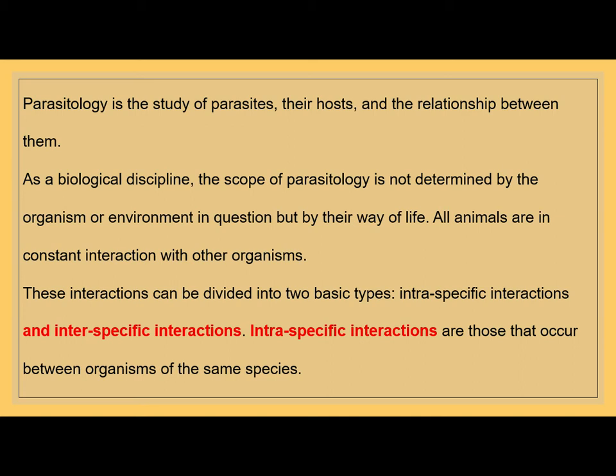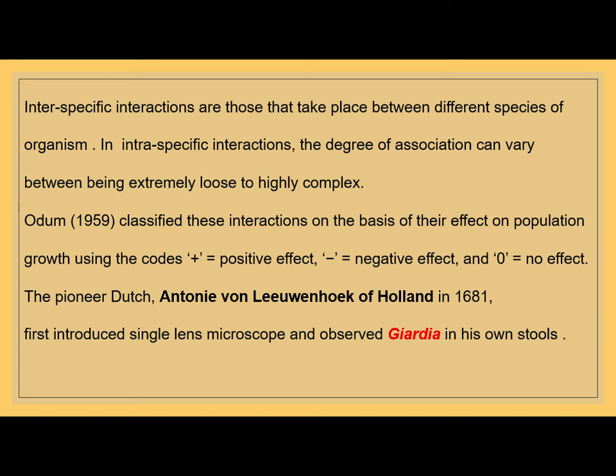All animals are in constant interaction with other organisms. These interactions can be divided into two basic types: intraspecific or interspecific. Intraspecific interactions are those that occur between organisms of the same species, whereas interspecific interactions are those that occur between different species. In interspecific interactions, the degree of association can vary from extremely loose to highly complex. Odum in 1959 classified these interactions on the basis of their effect on population growth, using the notation of codes: positive, negative, or zero, meaning no effect.